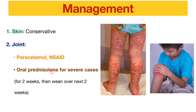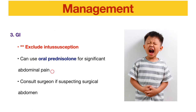For GI involvement, it is very important to exclude intussusception. If the patient has PR bleed or severe abdominal pain, do imaging to exclude that. After excluding surgical causes, if significant abdominal pain remains, consider oral prednisolone. If a surgical cause or intussusception is suspected, consult a pediatric surgeon.